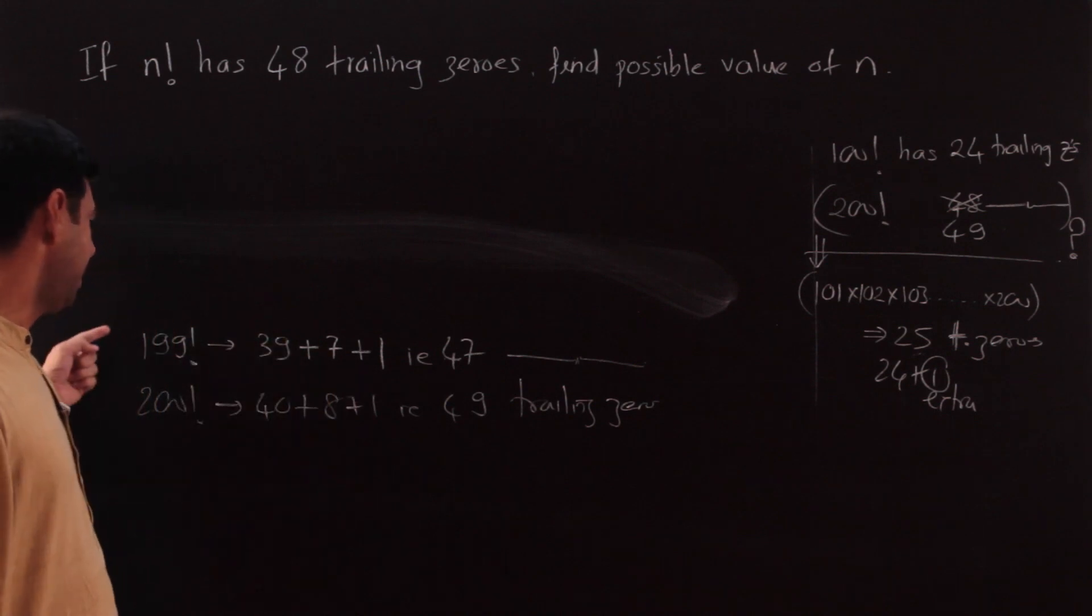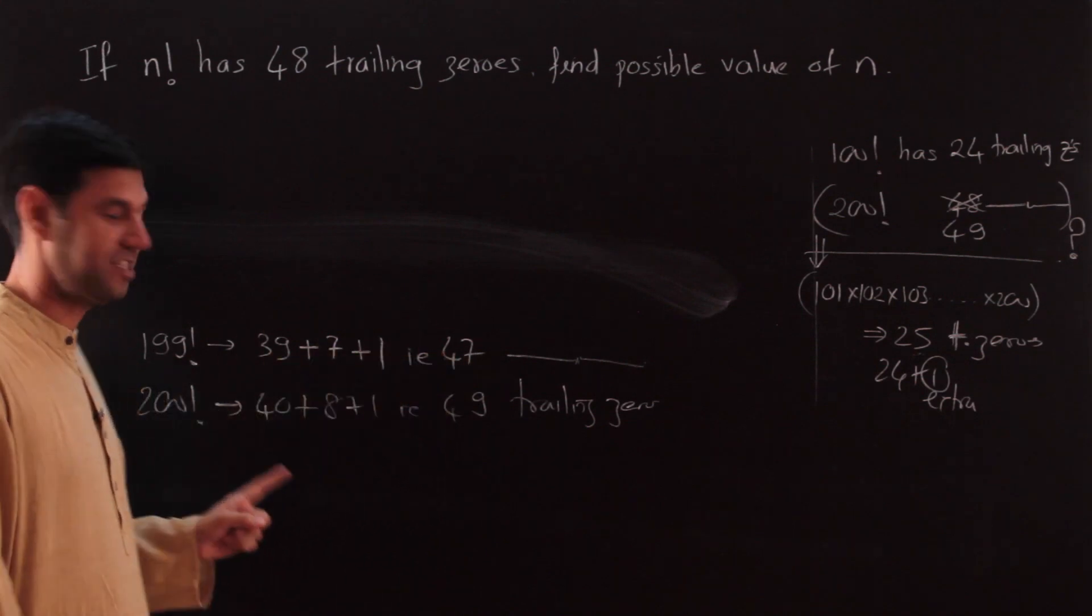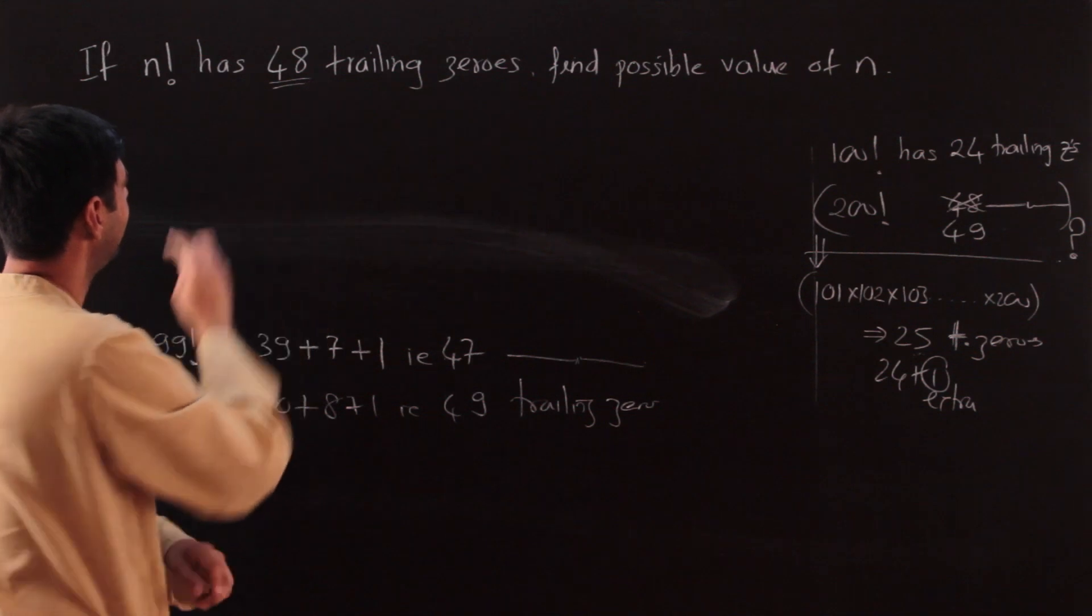199 factorial has 47, 200 has 49. Now which factorial would have 48 then? And so now, that's why I said this is an interesting chapter in itself.